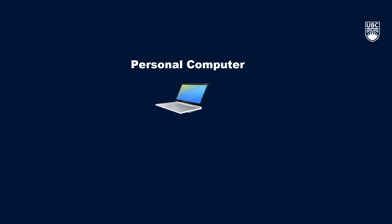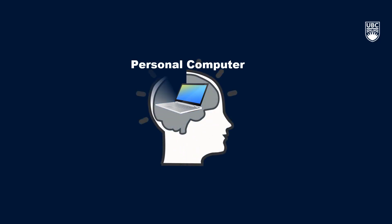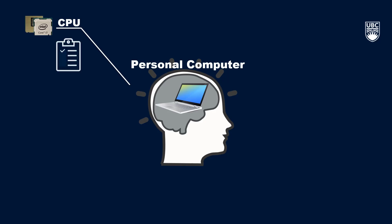You can think of the insides of your computer as a brain. Every home computer has a central processing unit, or CPU, which can be thought of as part of your computer's brain and is responsible for carrying out all the tasks your computer does.